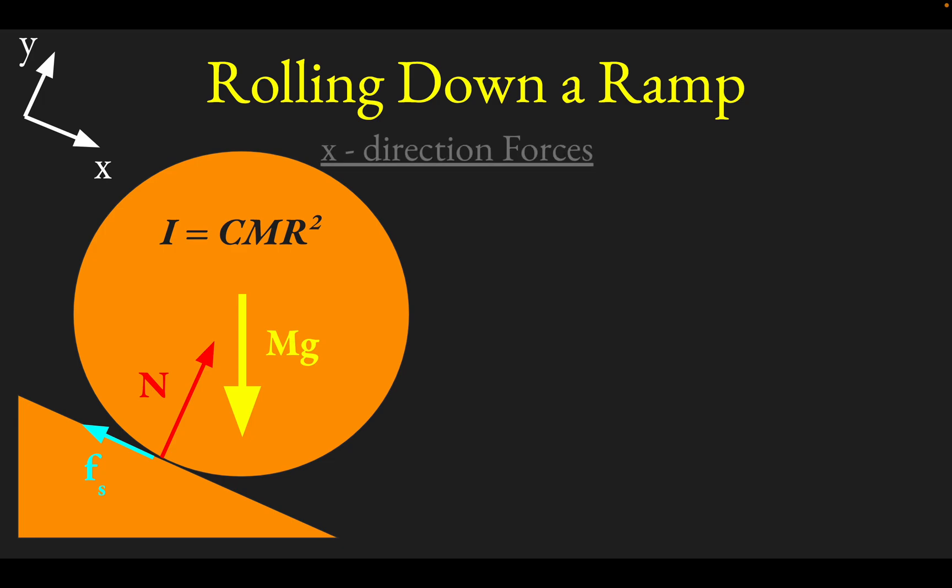And so what we'll then do is look at the x-direction forces and use Newton's second law. The net force equals MA. So the net force, if you look along the x-direction, is there's going to be a component of gravity that runs along the ramp. I'm showing that here with this yellow, extra yellow arrow that's blinking in and out.